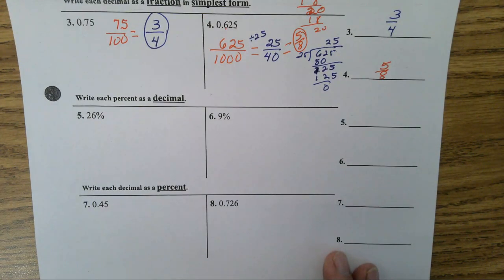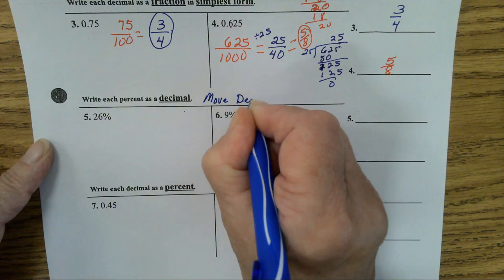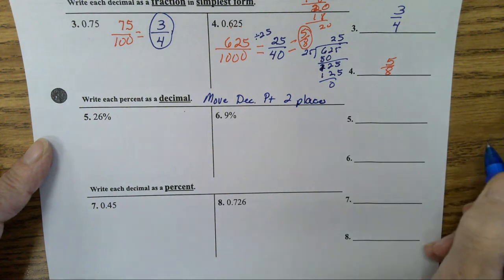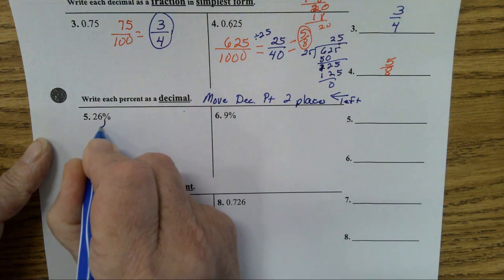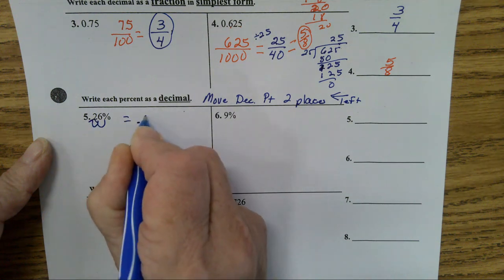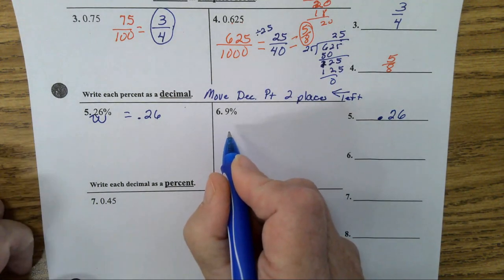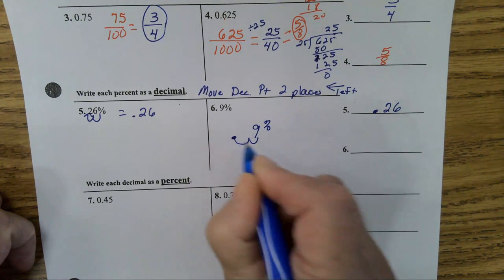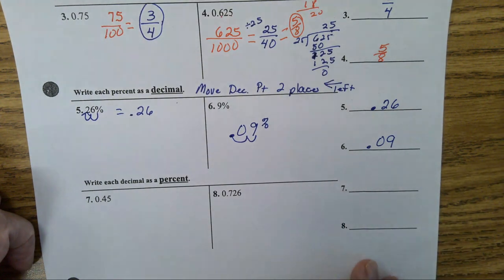Write each percent as a decimal. To change a percent to a decimal, you move the decimal point. Okay, let's put the notes here. Move decimal point two places which direction? Right or left? To the left. To the left. So, this one, one, two, it's going to be 0.26 as a decimal. What will this one be as a decimal? Let me move it one, two. What do you put in your empty loopy? Right. It'll be 0.09.